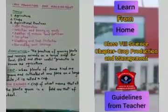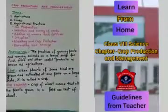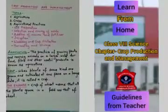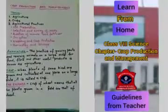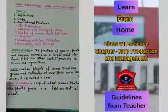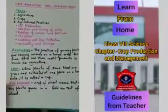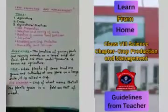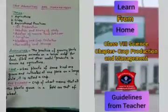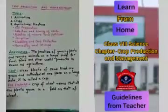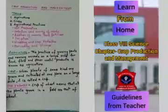Now, what are crops? When plants of the same kind are grown and cultivated at one place on a large scale, it is called a crop. For example, a crop of wheat means that all the plants grown in a field are that of wheat.